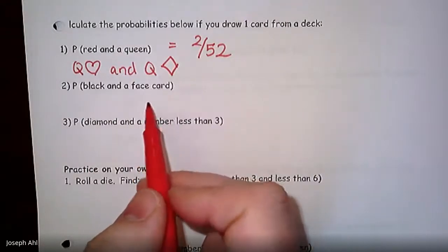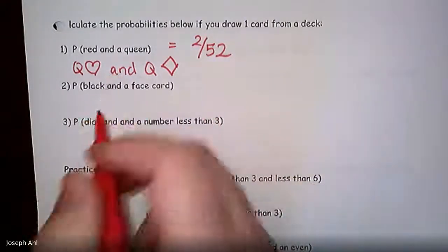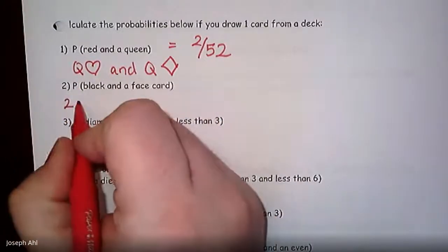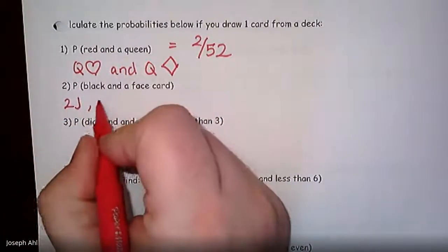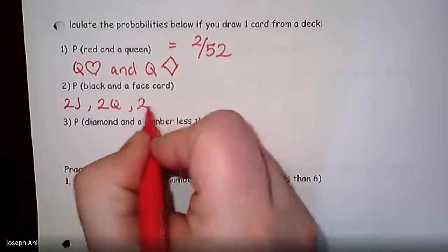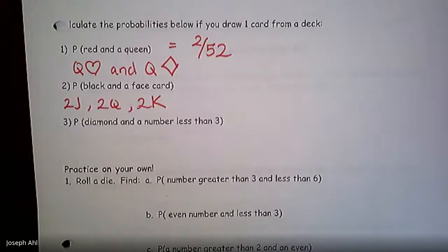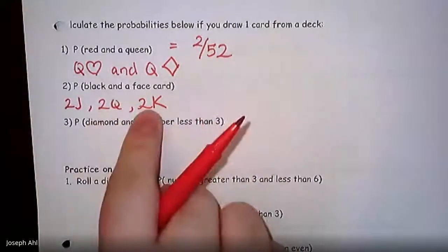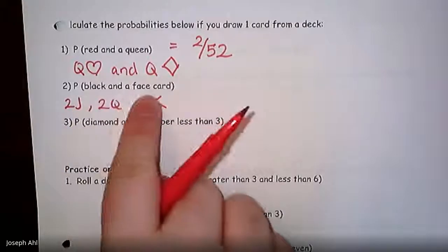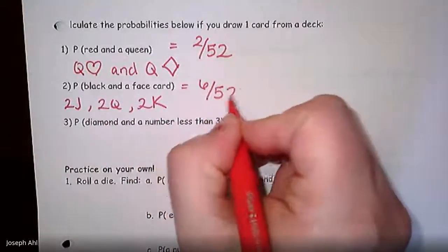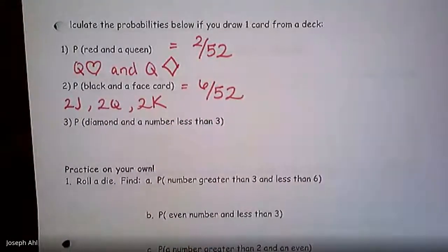For a black AND a face card: remember that face cards are jacks, queens, and kings. There are two black jacks, two black queens, and two black kings — the jack of spades, jack of clubs, and the same for queens and kings. So if you want a card that is both black and a face card, the probability is 6 out of 52.